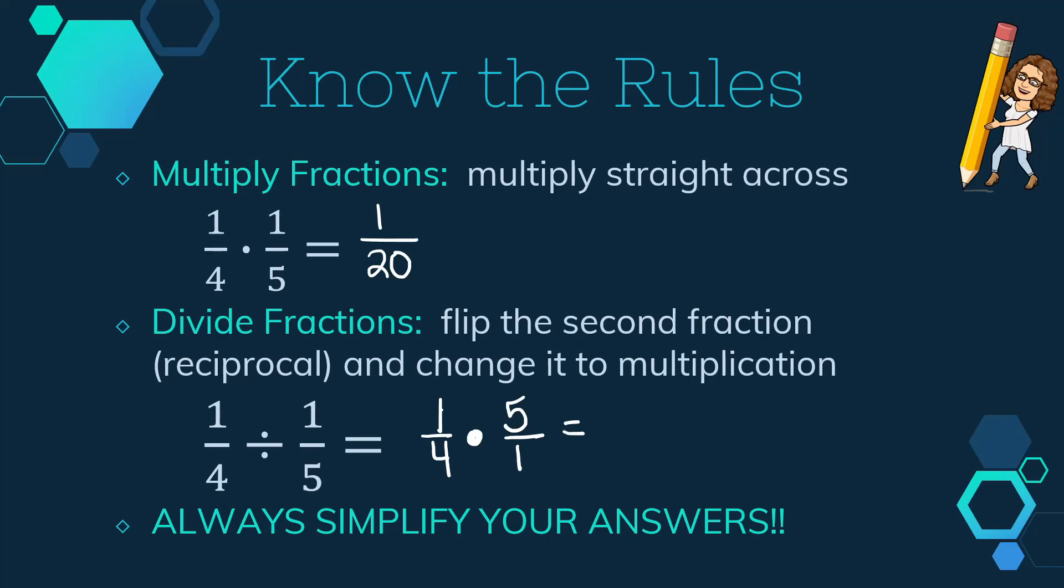And then it's just multiplying again. So you multiply numerators, 1 times 5, multiply denominators, 5 fourths, and then check, can we simplify? Because that's one thing we always want to check. Can we simplify our answers as we're working at it?